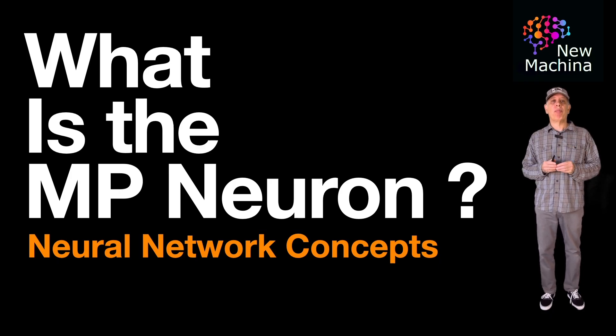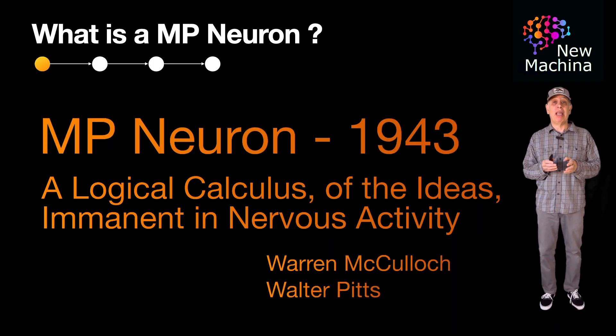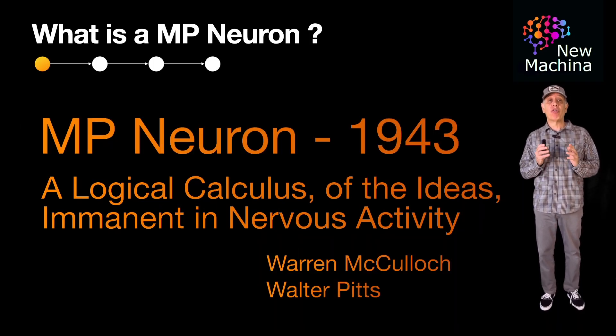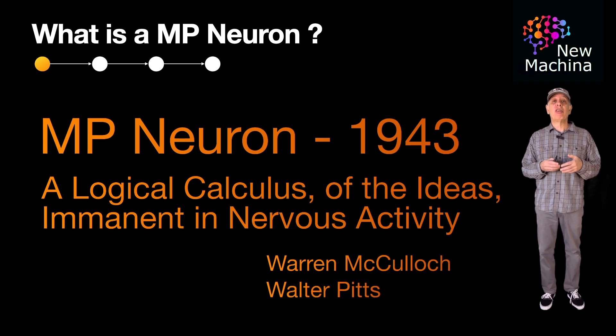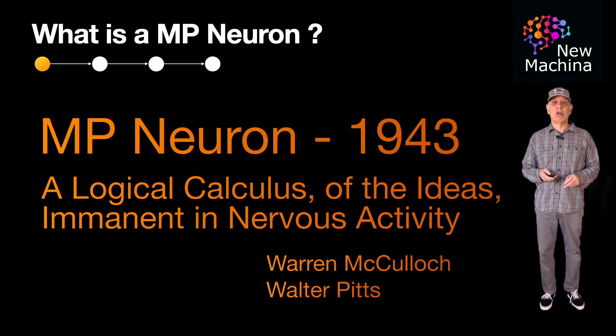Okay, so what is the MP Neuron? Well, the MP Neuron was developed in 1943 by Warren McCullough and Walter Pitts and was presented in their paper, A Logical Calculus of the Ideas Imminent in Nervous Activity. I shared a PDF link to their paper in the YouTube description.